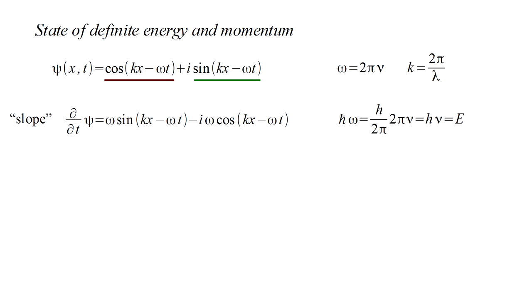Since omega is 2 pi nu, multiplying by H over 2 pi, which we call H bar, reduces to H nu equals E. So H bar omega equals E.